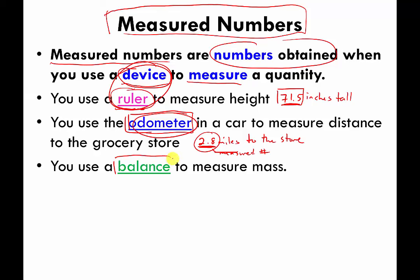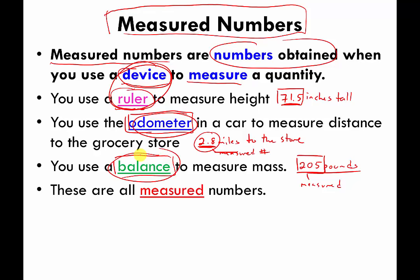Another example is if you use a balance to measure how much you weigh. Let's pretend that I weigh 205 pounds. This 205 is a measured number because I had to use a device called a balance to actually get it. Whenever you use a device to get a number from a measurement, that number is called a measured number.